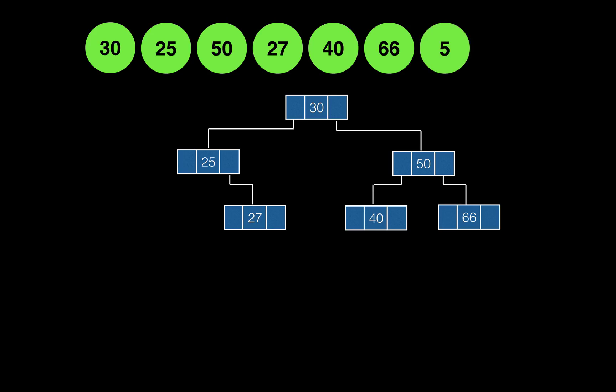Next, 5 is less than 30, so we move to the left subtree and check against 25. 5 is less than 25, so it should be to the left of 25. Then we insert 3 — 3 is less than 30, less than 25, and less than 5, so it should be to the left of 5.